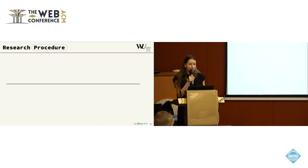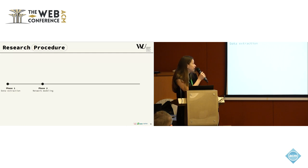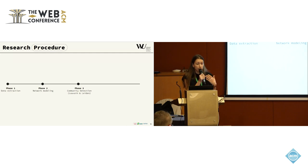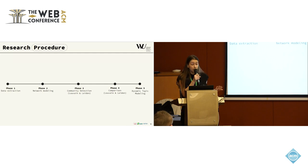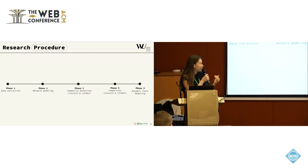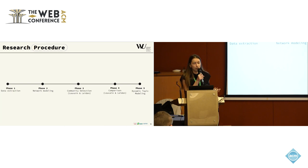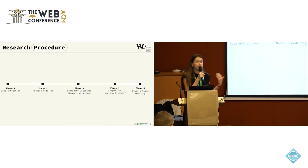Let's dive into our research procedure. It was divided into five phases. Phase one: data extraction and modeling of our network. Phase three deals with community detection using both Leiden and Louvain. After that, we compare the efficiency of the algorithms as well as the detected communities. Within phase five, we tried to use communities as a context matrix to see if there are topical similarities between communities detected by Louvain and Leiden.